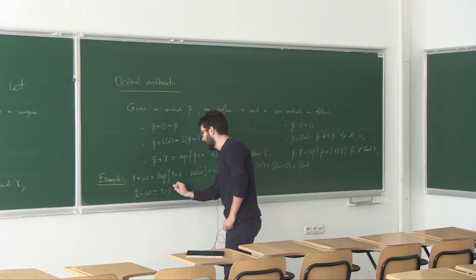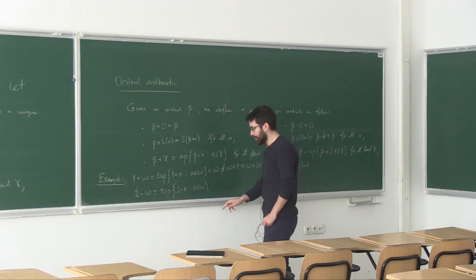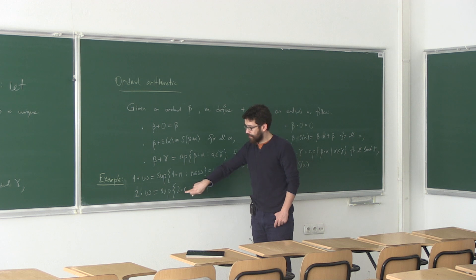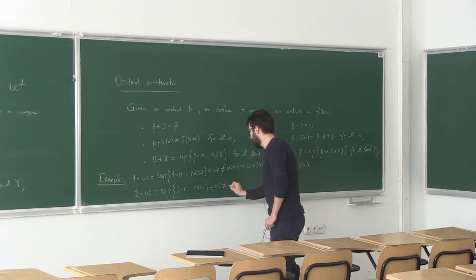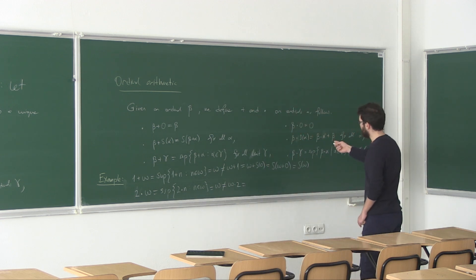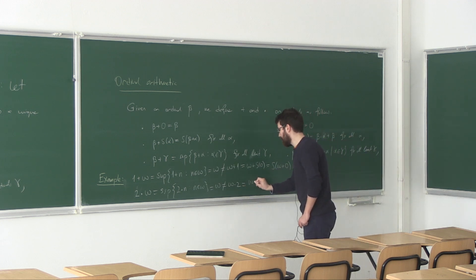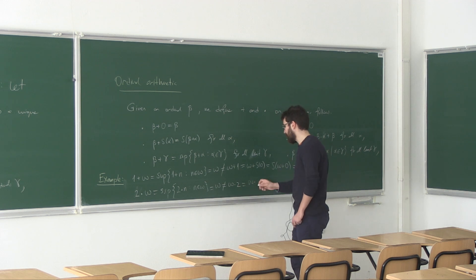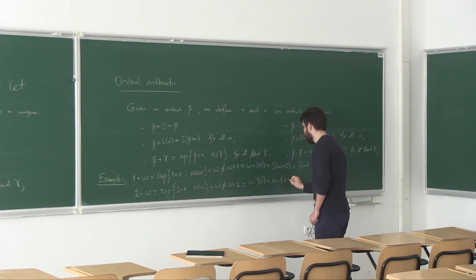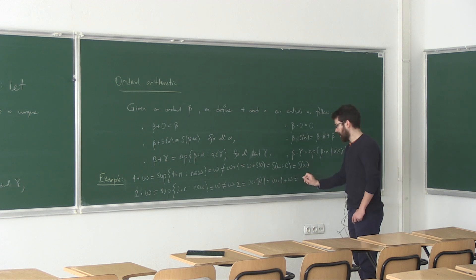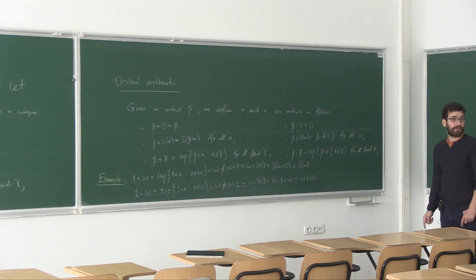The same is true for multiplication. If you calculate 2 × ω, this is sup{2 × n : n ∈ ω}. Plugging in natural numbers gives 0, 2, 4, 6, 8, … The supremum is ω. However, ω × 2 = ω × S(1) = ω × 1 + ω. You can check ω × 1 = ω, so ω × 2 = ω + ω. These operations are not commutative.